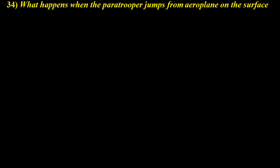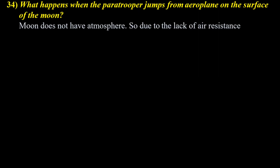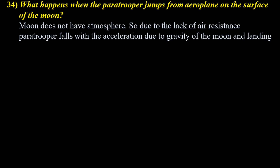What happens when a paratrooper jumps from an aeroplane on the surface of the moon? Moon doesn't have an atmosphere, so due to the lack of air resistance, the paratrooper falls with acceleration due to gravity of the moon and landing becomes unsafe. If there is acceleration, every second velocity goes on increasing, and he will fall with very large force. Hence, landing is not safe.